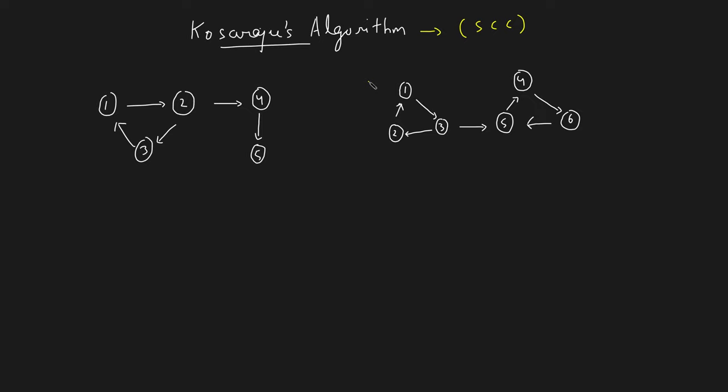In this video we will be learning about Kosaraju's algorithm. This algorithm helps you to find out all the strongly connected components in a directed graph.